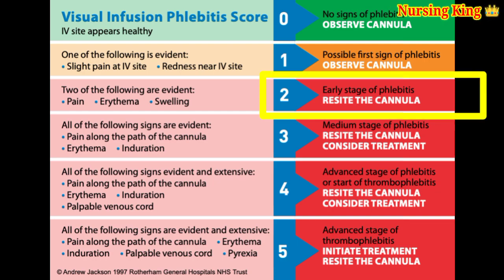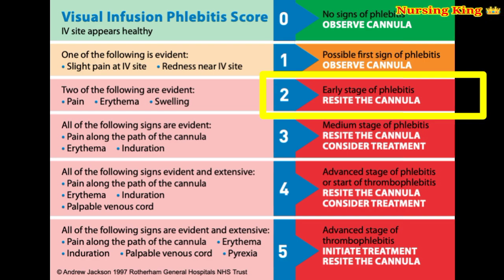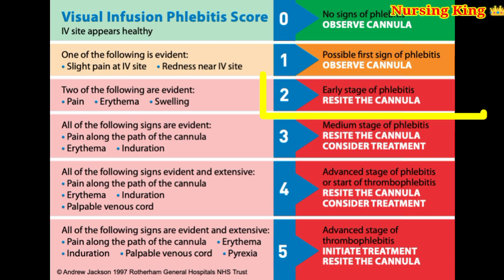Score 2 is the early stage of phlebitis. At this stage, pain is present, erythema and swelling are there. At score 2, we remove that IV line and insert a new IV line.